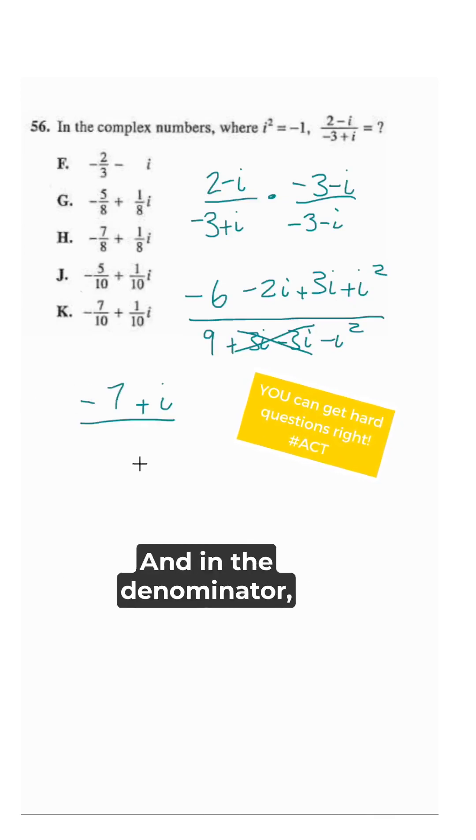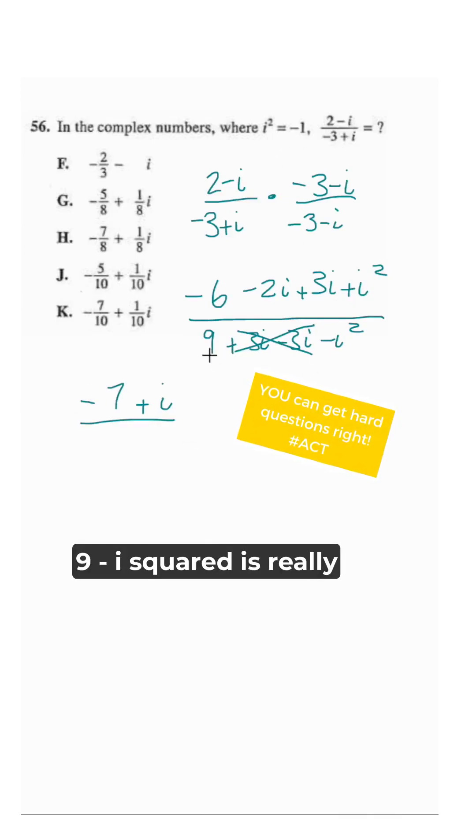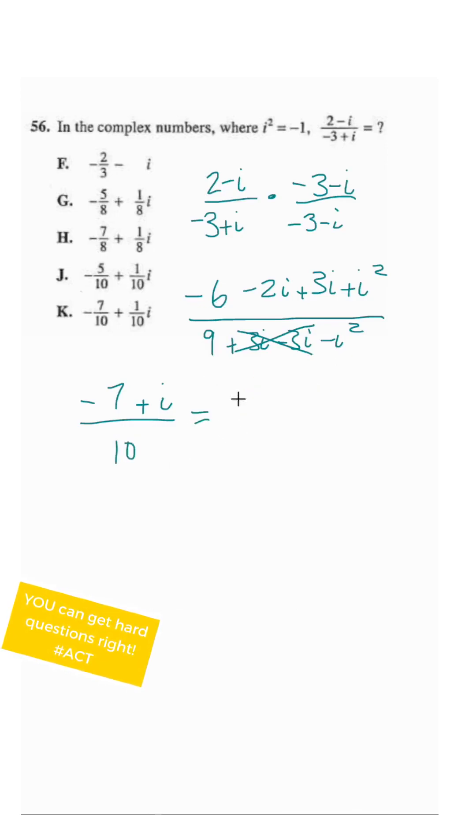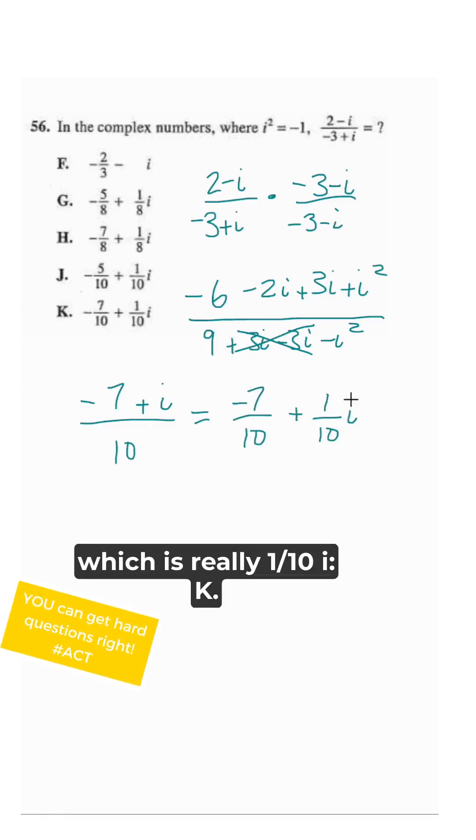In the denominator, nine minus i squared is really nine plus one, or ten. Now we just have to rewrite this: negative seven tenths plus i over ten, which is really one tenth i.